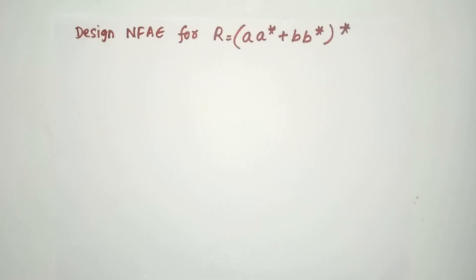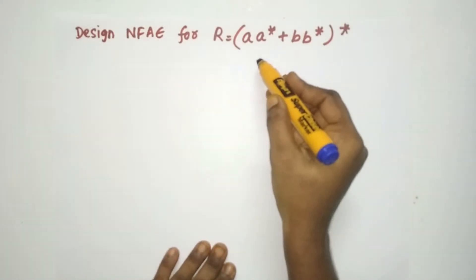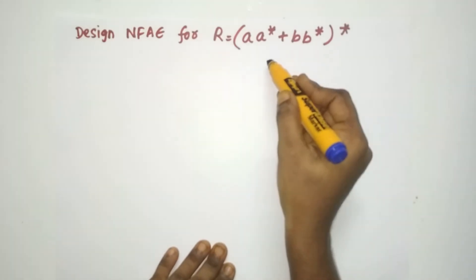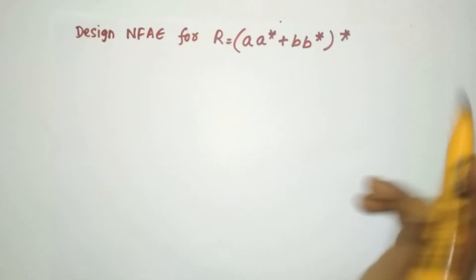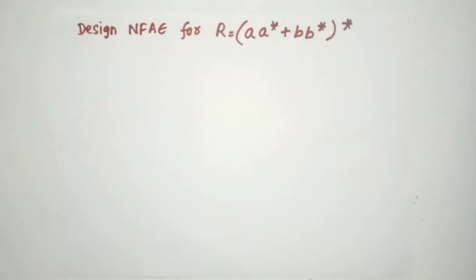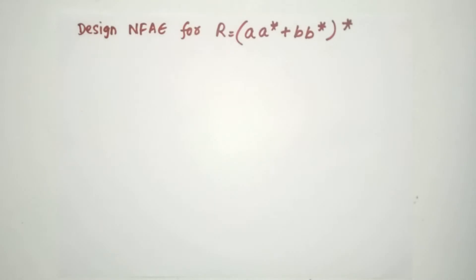Let us design an NFA Epsilon for the regular expression R = (A*+BB*)*, the whole closure. Whenever you start creating an NFA Epsilon, you should have a clear plan before you begin. You must decide which sub-expression to prioritize first, considering the operators, parentheses, and all three operator types — concatenation, union, and closure.